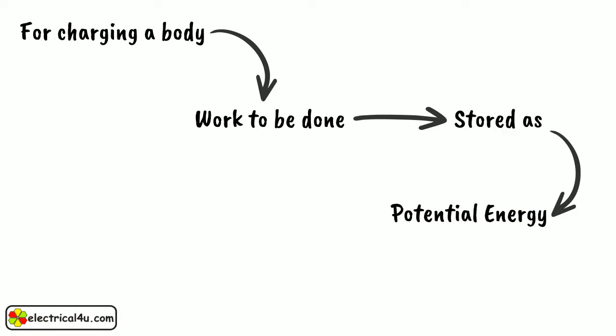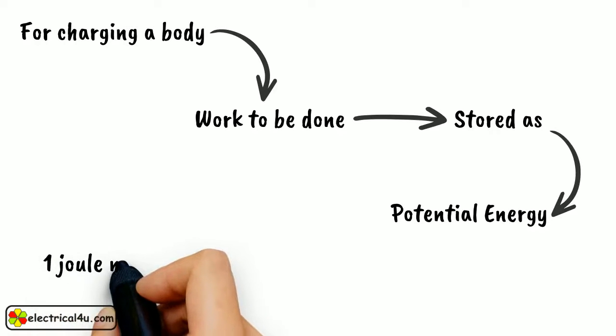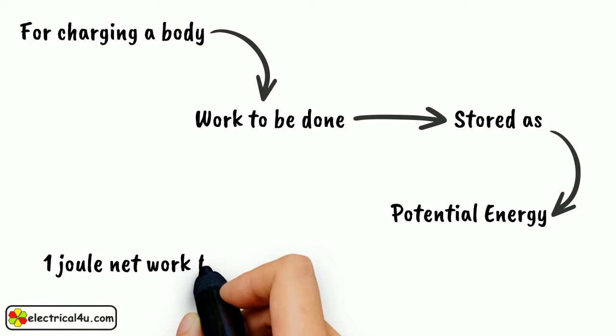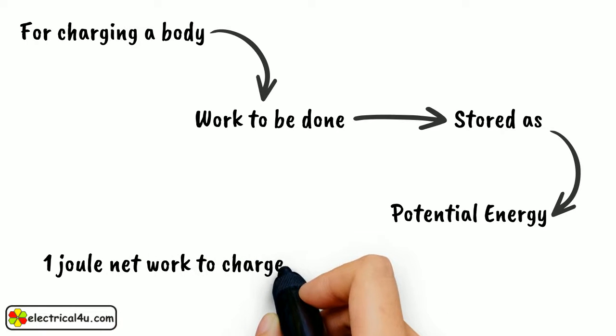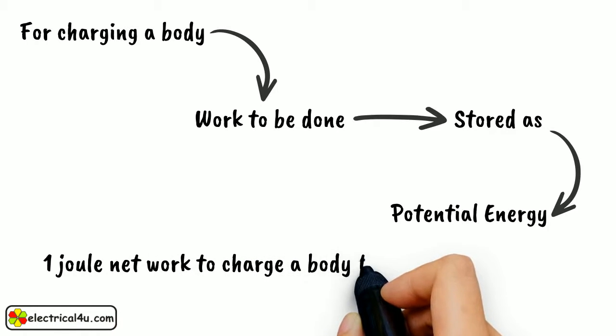This charged body can do work by attracting or repelling other charges. The ability of a charged body to do work is called its potential or precisely electrical potential. If one joule net work required to be done to charge a body to one coulomb is denoted as one volt.